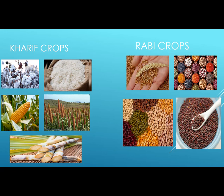The Kharif crops grow in summer and include cotton, rice, maize, millet, and sugarcane, as you can see in the picture. And Rabi crops grow in winter and include wheat, pulses, grams, and mustard. These are the main crops grown in both the plains of Pakistan and India — this is what is common in the two regions.